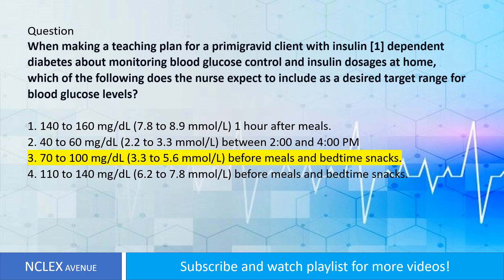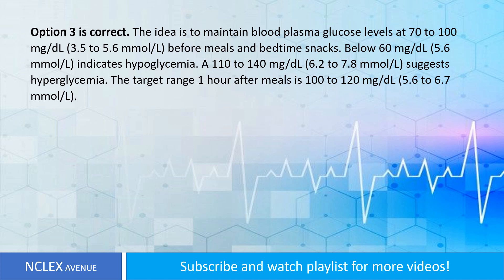Answer: Option three is correct. The goal is to maintain blood plasma glucose levels at 70 to 100 mg/dL (3.5 to 5.6 mmol/L) before meals and bedtime snacks. Below 60 mg/dL (3.3 mmol/L) indicates hypoglycemia. A level of 110 to 140 mg/dL (6.2 to 7.8 mmol/L) suggests hyperglycemia. The target range one hour after meals is 100 to 120 mg/dL (5.6 to 6.7 mmol/L).